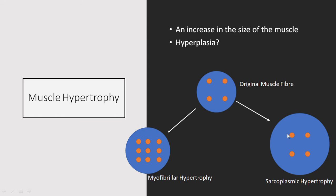Then we have theorized sarcoplasmic hypertrophy, which is essentially an increase in the area surrounding the muscle fiber cell but not the actual contractile unit. So we have the same amount of contractile units but an increase in the other organelles surrounding the myofibrils. This is more of a theorized phenomenon, probably arising from differences we see between strength athletes — who appear to have a denser-looking physique — compared to bodybuilders, who have a more bubbly-looking physique. It also relates to the fact that weightlifters and powerlifters are much stronger per pound of body weight than bodybuilders.